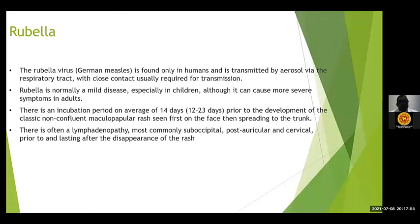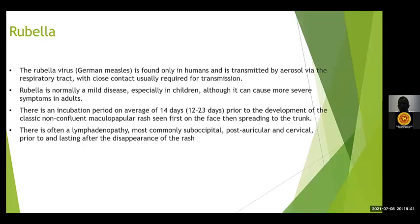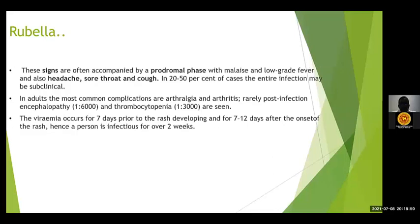We will now focus on individual organisms. First, rubella — commonly called German measles — is found in humans and transmitted by aerosol route. Rubella is normally a mild disease seen especially in children, and mothers usually acquire rubella after exposure to an infected child. The incubation period is 14 days. The classic feature is a non-confluent maculopapular rash, first seen in the face spreading to the trunk, followed by lymphadenopathy in the occipital, post-auricular, and cervical areas. In 20 to 50% of cases the entire infection is subclinical.